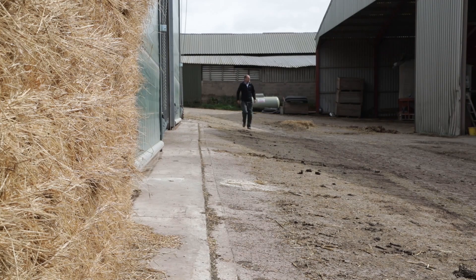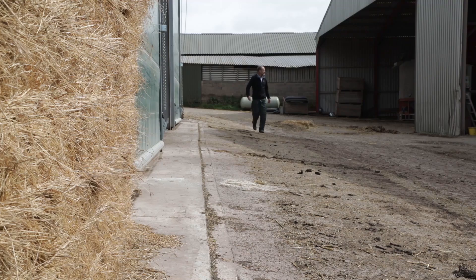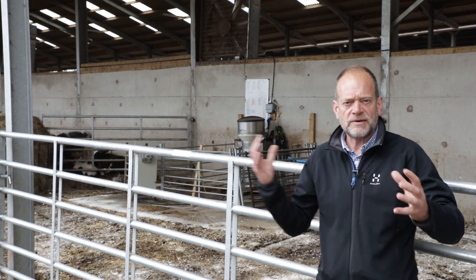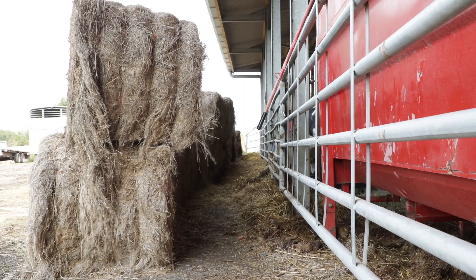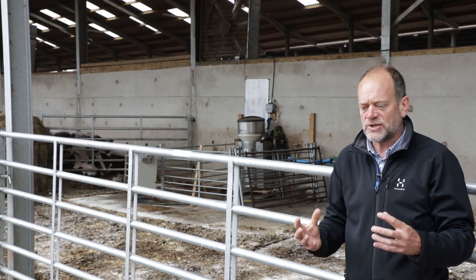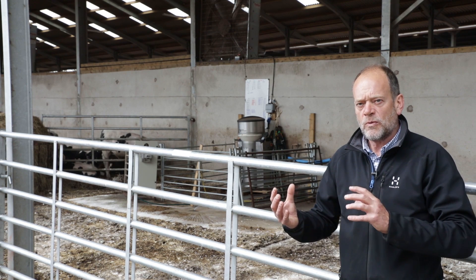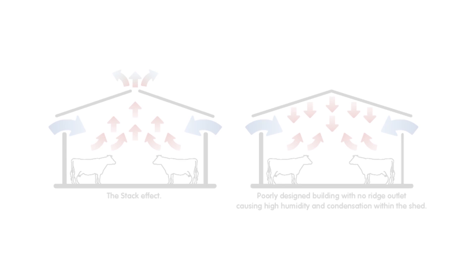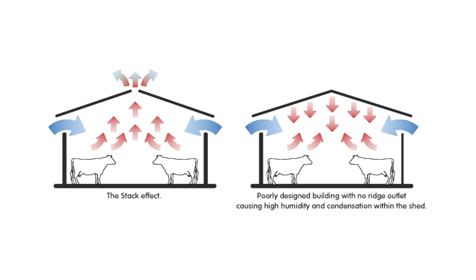Once we get away from younger cattle, in theory it gets easier because we can start to assess buildings not only on how the wind-driven ventilation works and where it gets in around the building, but also on whether the building has enough opening in the roof and enough opening in the side walls for the stack effect to work. It's absolutely essential that when wind speed drops, the heat and energy from the cattle can drive ventilation — warm air rises, and if there's a big enough hole in the roof, fresh air is drawn in.